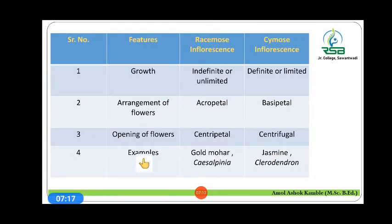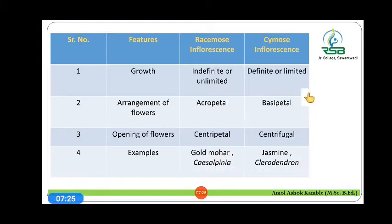In cymose inflorescence, the opening is centrifugal. Examples of racemose inflorescence are gold mohar and Caesalpinia. Cymose inflorescence is found in jasmine and Calotropis. Review questions: What is inflorescence? Distinguish between racemose and cymose inflorescence. Give the significance of inflorescence.